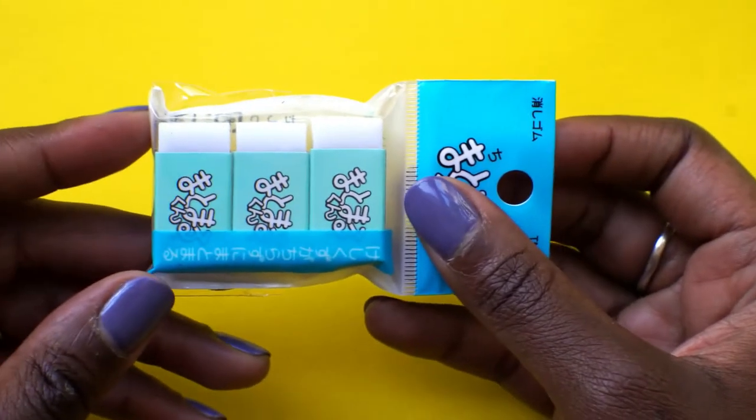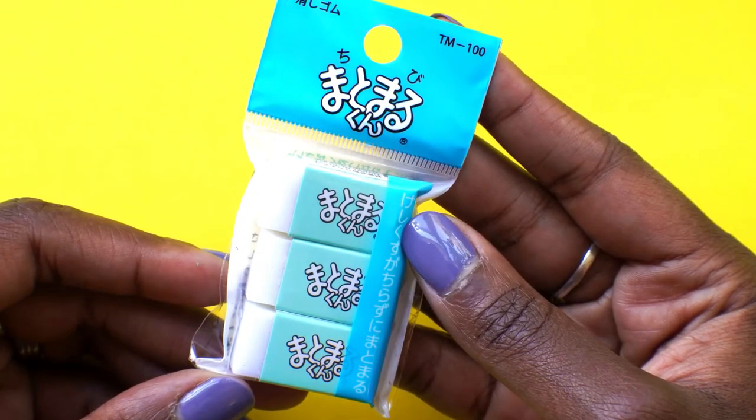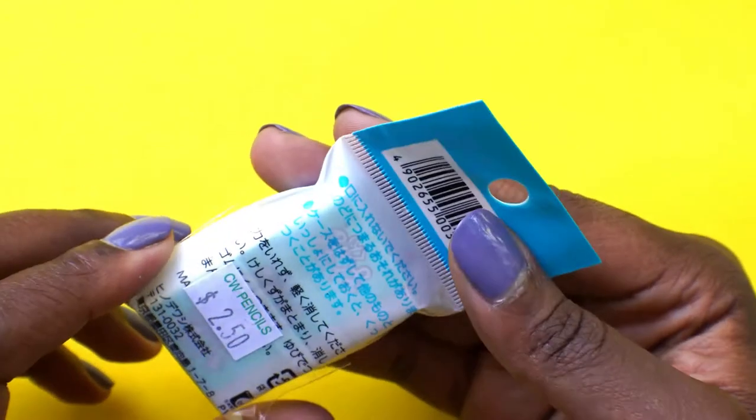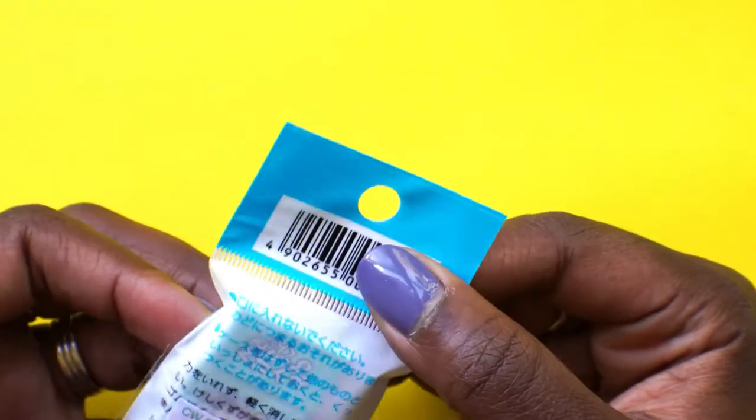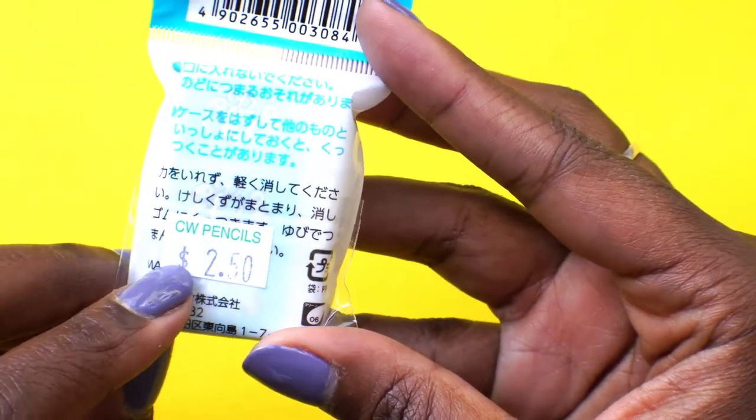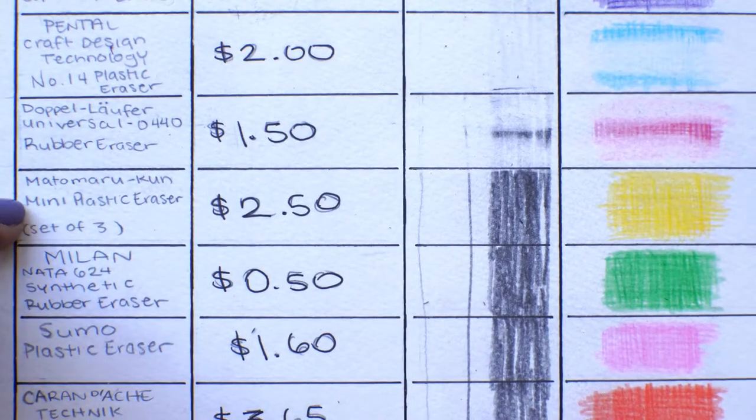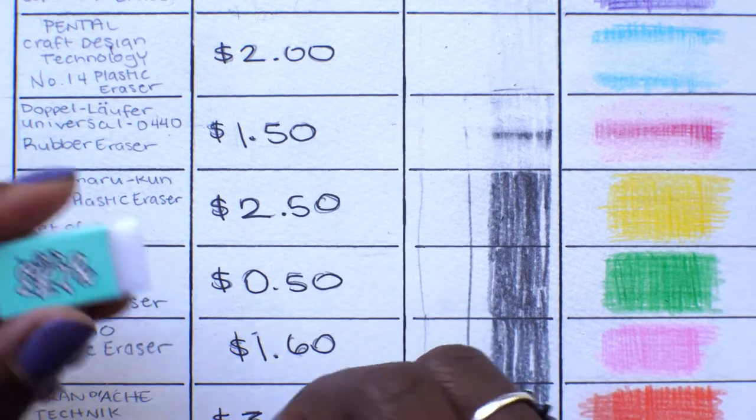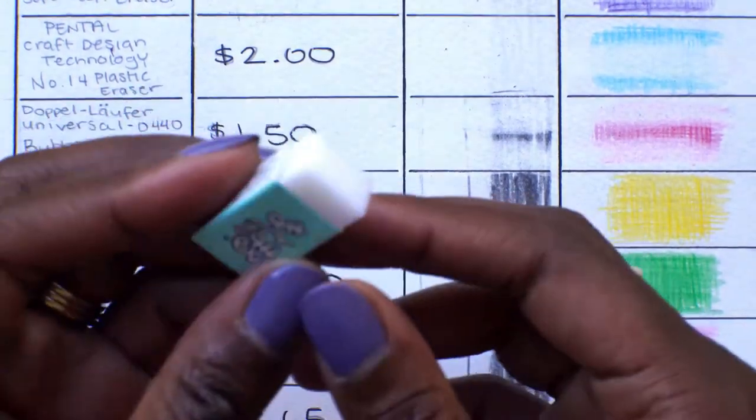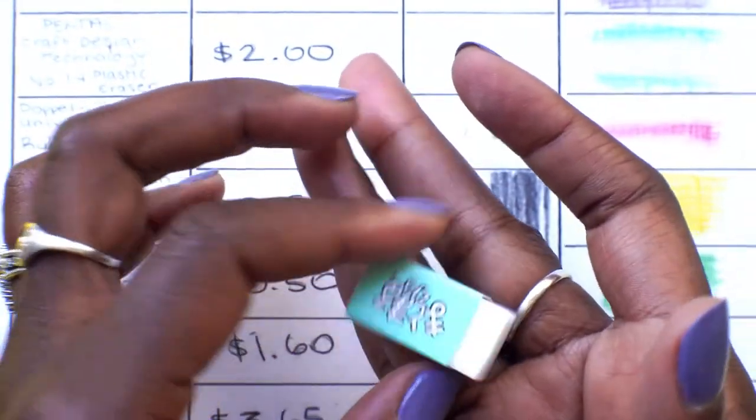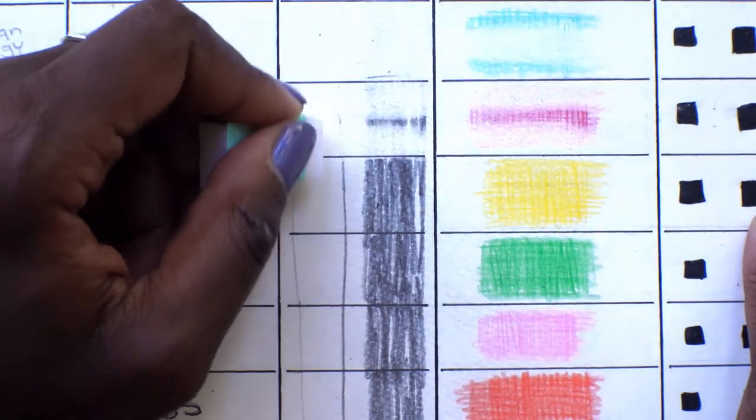Okay. So, the next eraser is the Matomaru-kun mini plastic eraser set of three. So, I kind of just picked these guys up. I have no context of what these erasers are for. But, CW. Let's take one out. And they're very tiny. Very cute. It's very soft. So, the Matomaru set of three is $2.50. And, yeah. These are so cute, these erasers. But, I don't think these are gonna be good for any bigger pieces. These are definitely detail erasers. Let's see if it is worth the $2.50. $2.50 for three of these small little guys. It's kind of a lot, right?